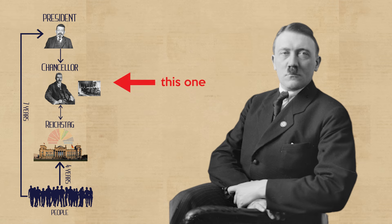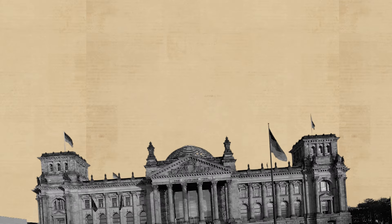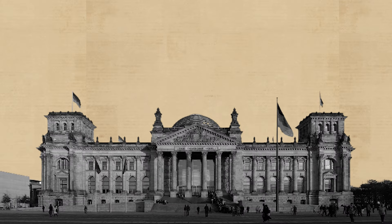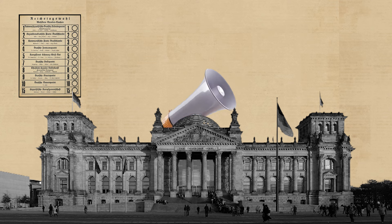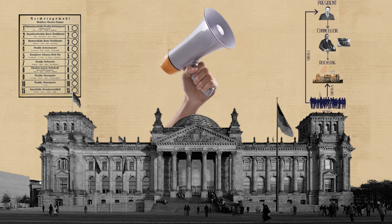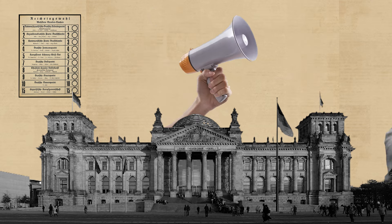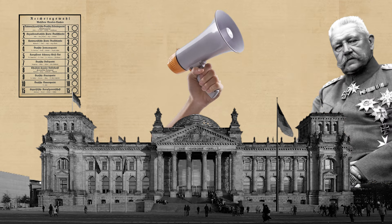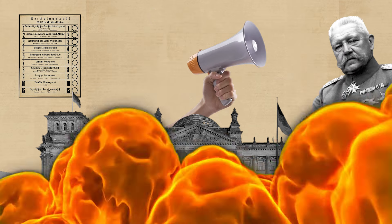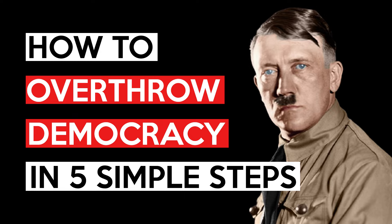Hitler is now chancellor, but that doesn't really mean anything. Democracy in Weimar Germany still exists. We still have fair and free elections, freedom of the press, freedom of speech and freedom of expression, division of power and the Reichstag. Even Hindenburg is here. So here's how you destroy all that and overthrow democracy in five simple steps.